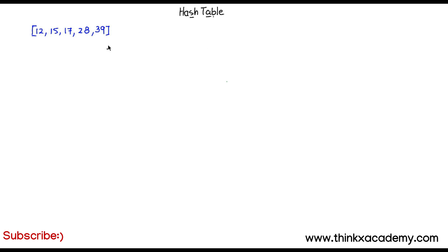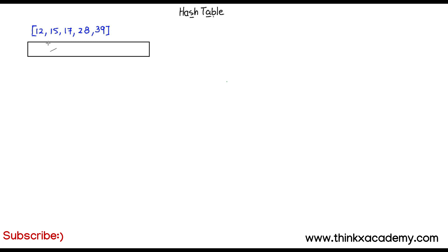I want to perform a search operation to find a particular element inside an array. I will store all the given integers in an array. First, we will see how we perform the search operation in this array, and then we will see how we can convert this method into a hash table.